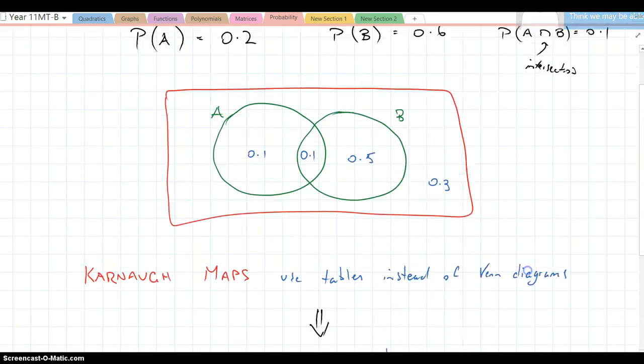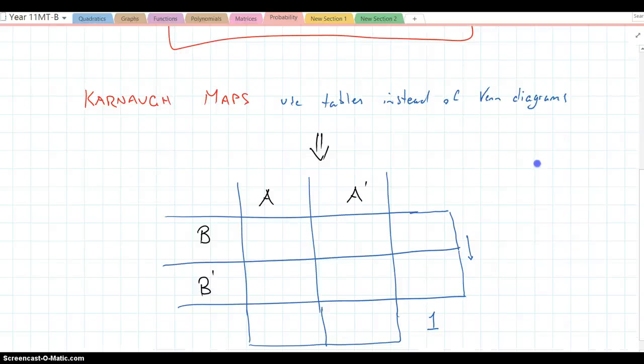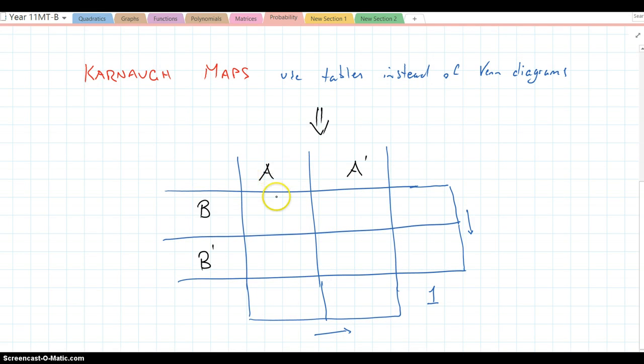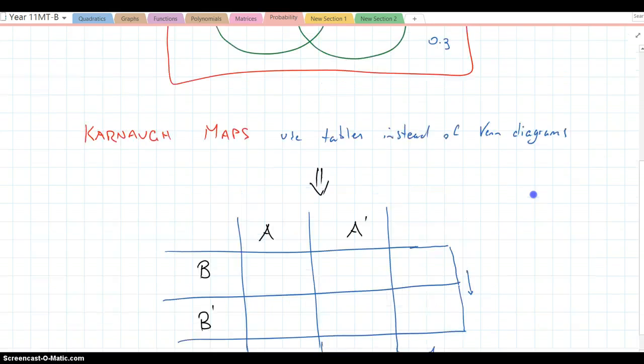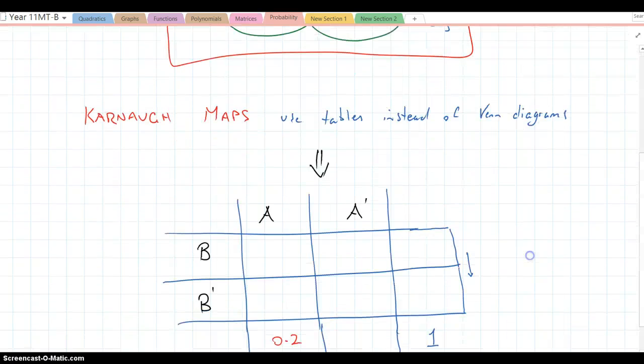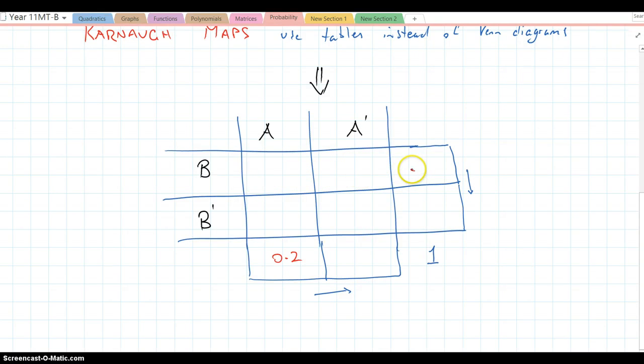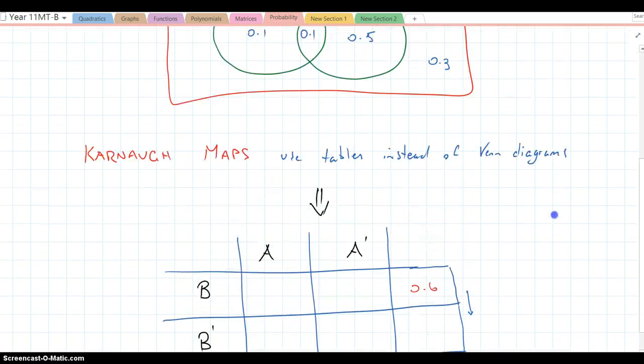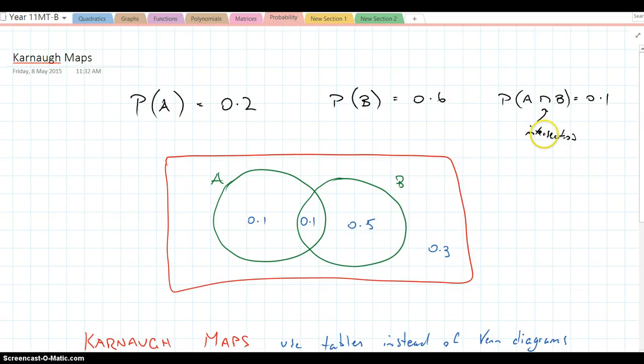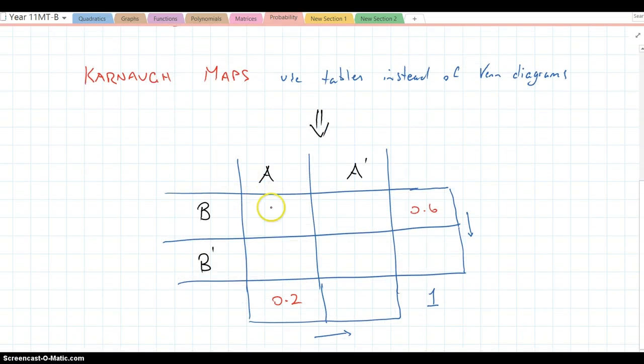Let's get the information. The probability of A is 0.2, so that goes in there. The probability of B is 0.6, so that goes across here as 0.6. And the probability of A intersection B is 0.1. Now A intersection B is here, 0.1. If that's 0.1, these two cells here have to add up to 0.2, so that would be 0.1. These two cells here have to total to 0.6, so that's 0.5. Do you see what's going on?